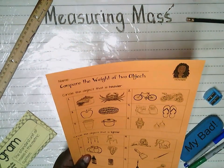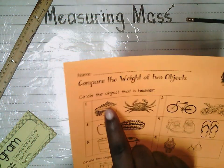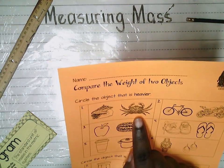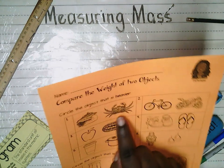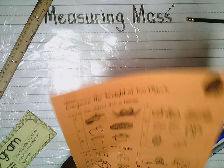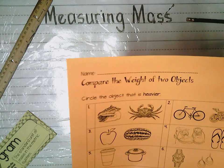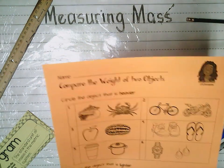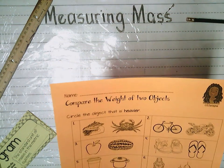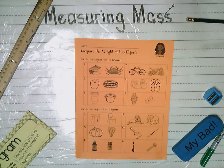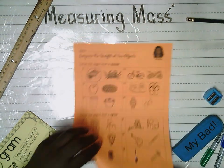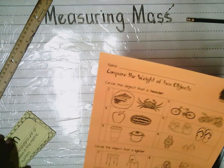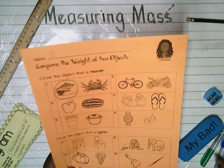Let's do the first one together. We have a conch — it's not just a conch shell, there's a conch in it — and then we have a crab. This is a little black crab, not the white crab. Think about it: which is heavier, the conch in the conch shell, or the crab? Definitely the conch is heavier than the crab. The conch shell alone is very heavy — those things have a lot of mass.